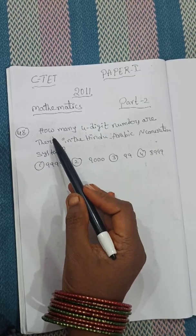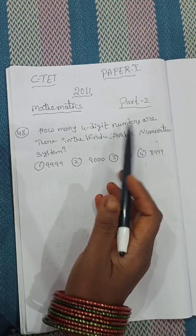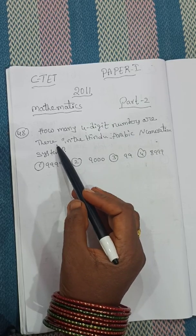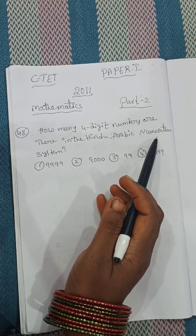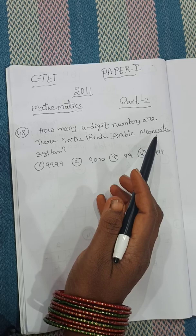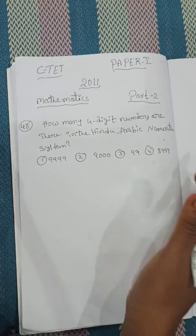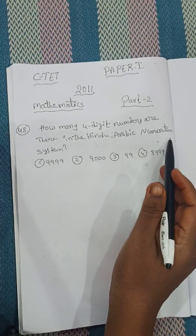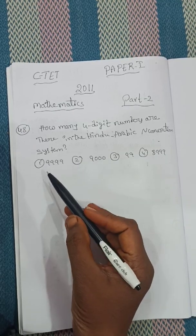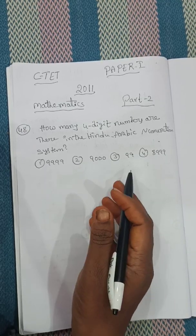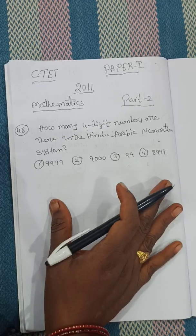The sum is: how many 4-digit numbers are there in the Hindu Arabic numeration system? Before I explain, let me cover one topic.